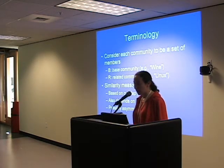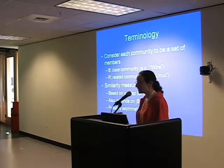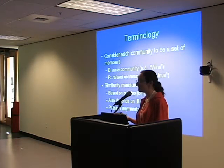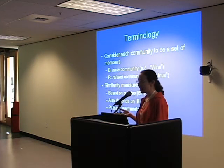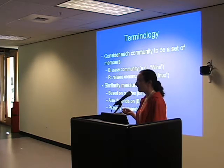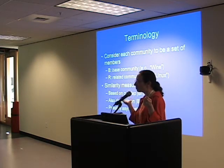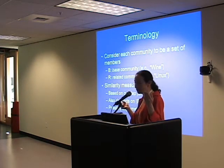Here's some terminology I'll be using. You can consider each community to be a set of members. We might talk about a base community B, like Wine, for wine lovers, and a related community R, like Linux. What we want is a measure of similarity — how good a recommendation is R for B?